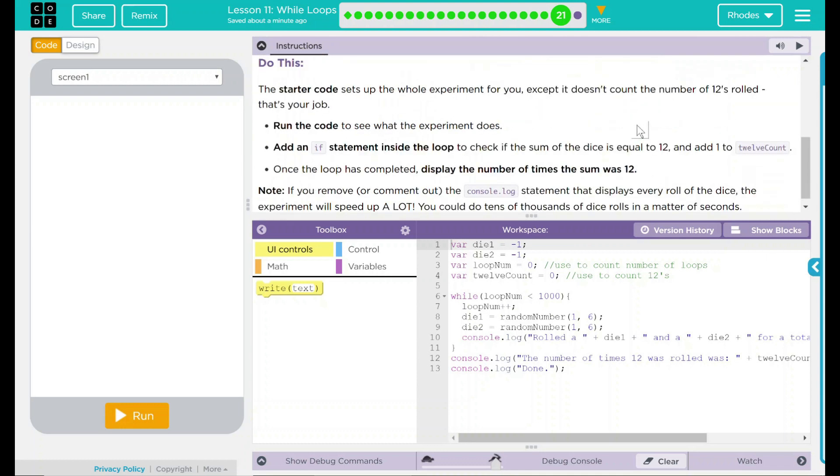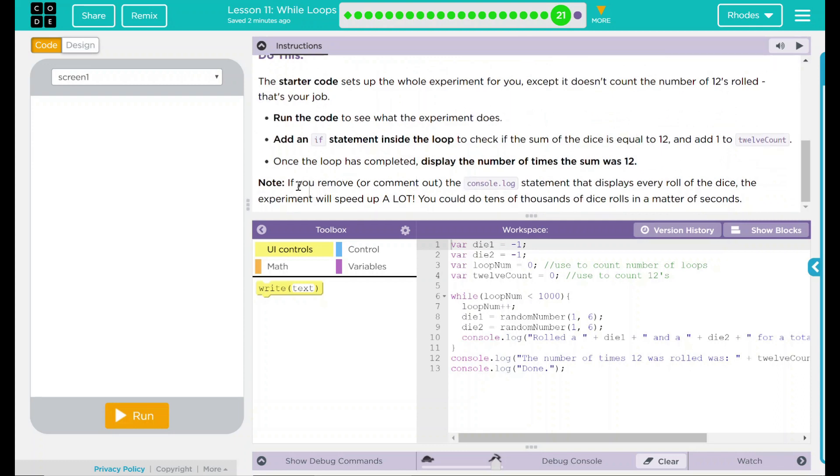The starter code sets up the whole experiment for you, except it doesn't count the number of 12s rolled. That's your job. Run the code to see what the experiment does. Add an if statement inside the loop to check if the sum of the dice is equal to 12 and add one to the 12 count. Once the loop is completed, display the number of times the sum was 12. Note: if you remove or comment out the console.log statement that displays every roll of the dice, the experiment will speed up a lot. You could do tens of thousands of rolls of dice in just a matter of seconds. Well, that all sounds very interesting to me. Let's take a minute here and go and look at our code.